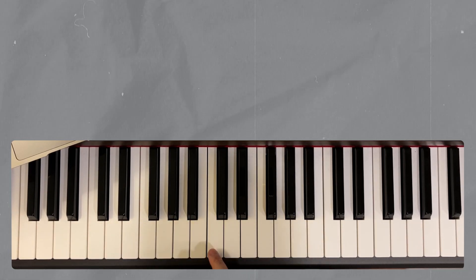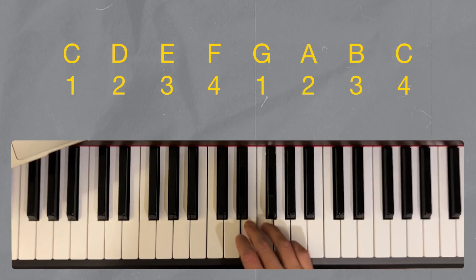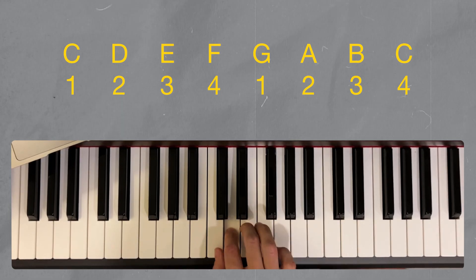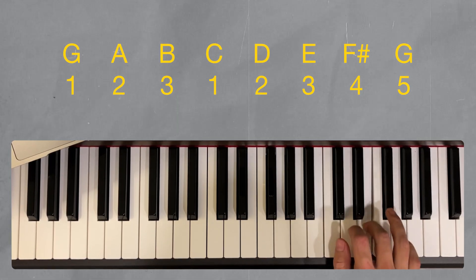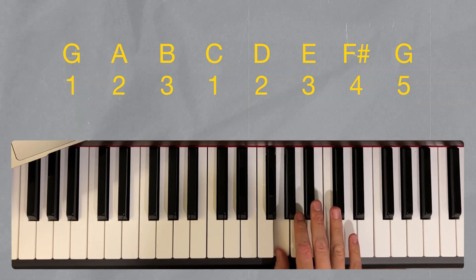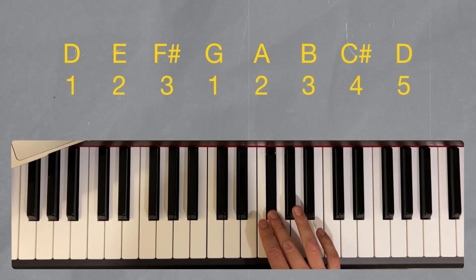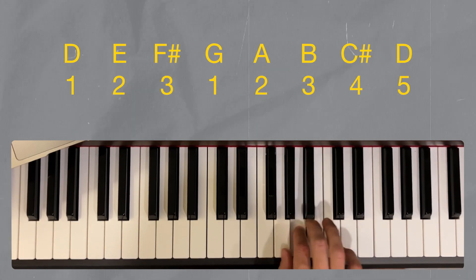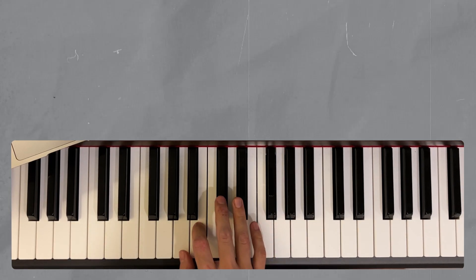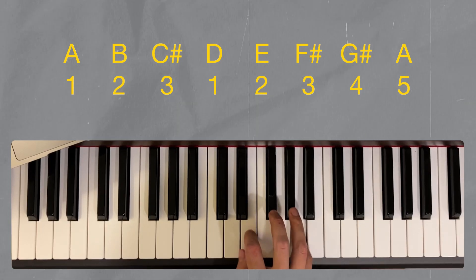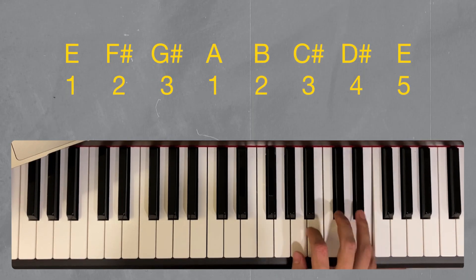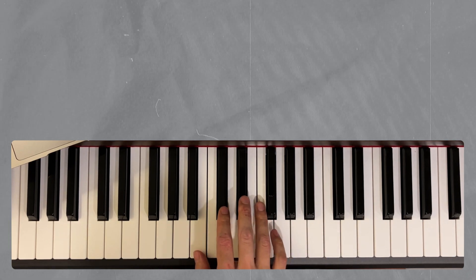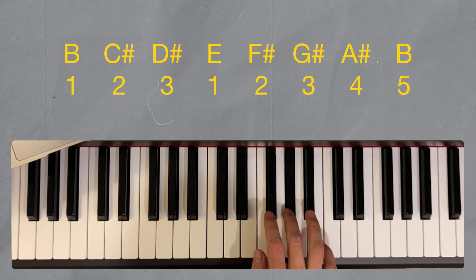Now I'll go back to C and we'll go around the sharp side of the circle of fifths. For G, 1, 2, 3, 1, 2, 3, 1, 2, 3, 4, 5. D major, 1, 2, 3, 1, 2, 3, 4, 5. A major, 1, 2, 3, 1, 2, 3, 4, 5. E major, as you might have guessed, 1, 2, 3, 1, 2, 3, 4, 5. And B, 1, 2, 3, 1, 2, 3, 4, 5.